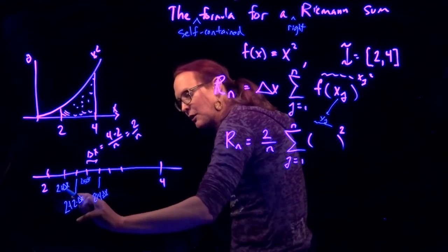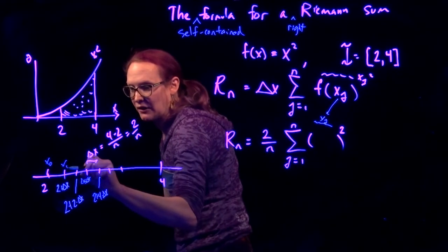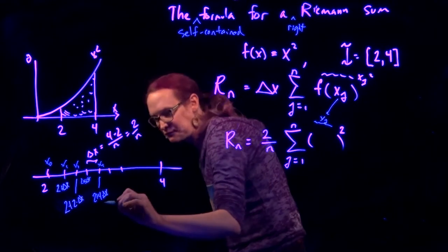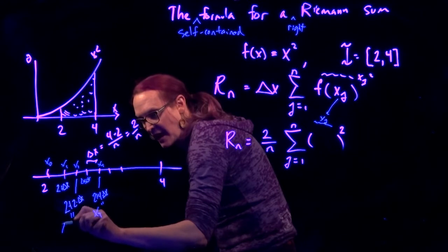So all I'm doing is increasing the number in front of the delta x. This is x0, x1, x2, x4, right? That's equal to x sub 4. This one's equal to x sub 2.